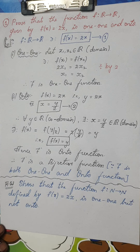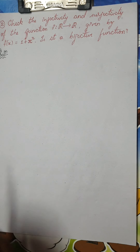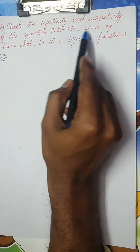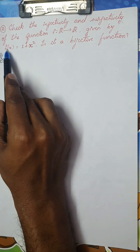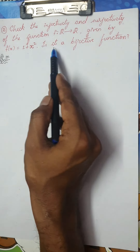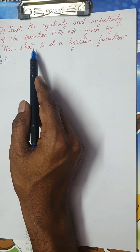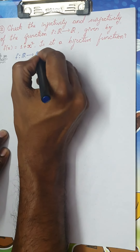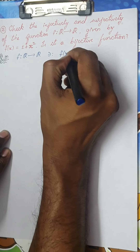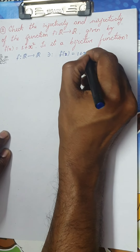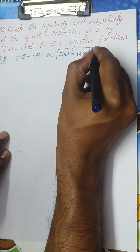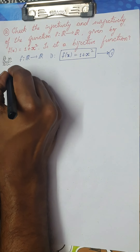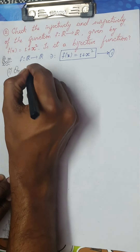We shall move on to the second question for the session. Check the injectivity and surjectivity — that is, the 1-1 and onto condition — of the function f from R to R defined by f(x) = 1 + x². I have to check the 1-1 and onto condition, i.e., is it a bijective function? Let us write down the given data. f is defined from R to R such that f(x) = 1 + x². Take this as equation 1. Let us go for the first case: the 1-1 condition.